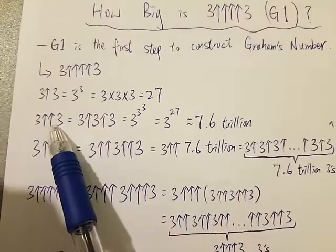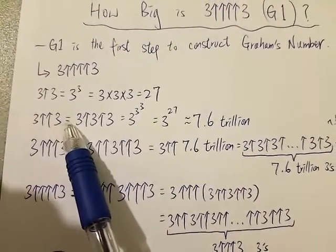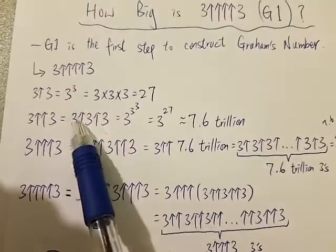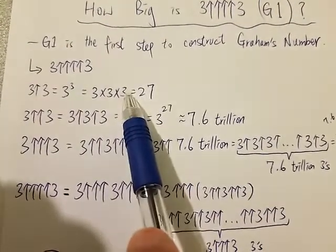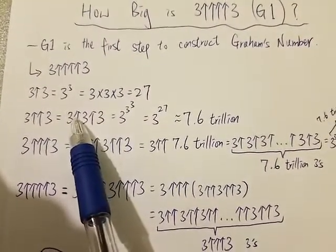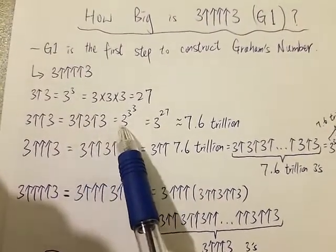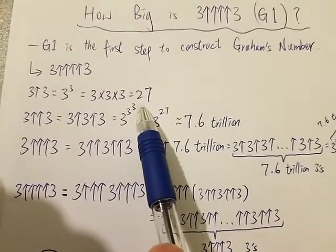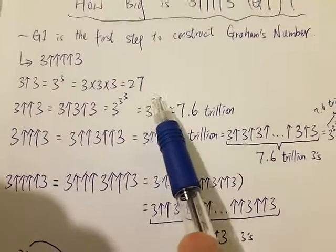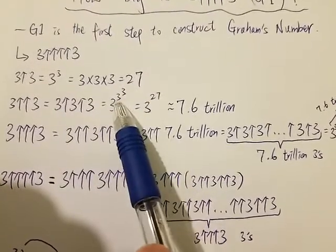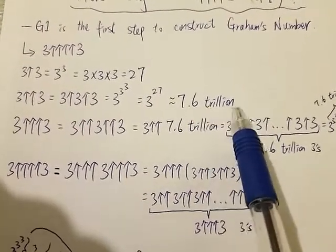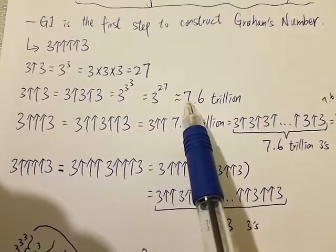What about 2 arrows? So 3 double arrow 3 equals 3 arrow 3 arrow 3. We can see it has the same pattern — this is multiplication, and here is exponentiation. So 3 arrow 3 arrow 3 is equal to 3 to the power of 3 to the power of 3, which equals 3 to the power of 27. You have to do it from the top to the bottom.